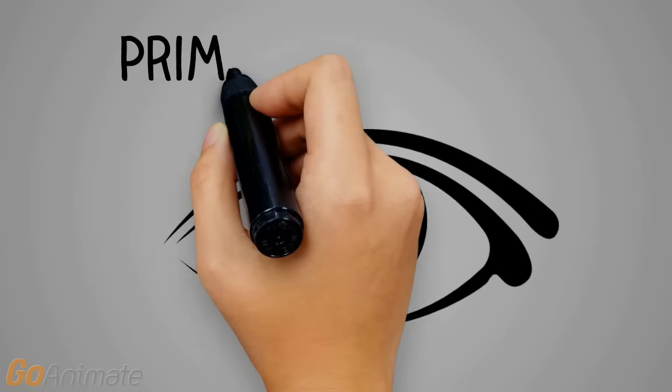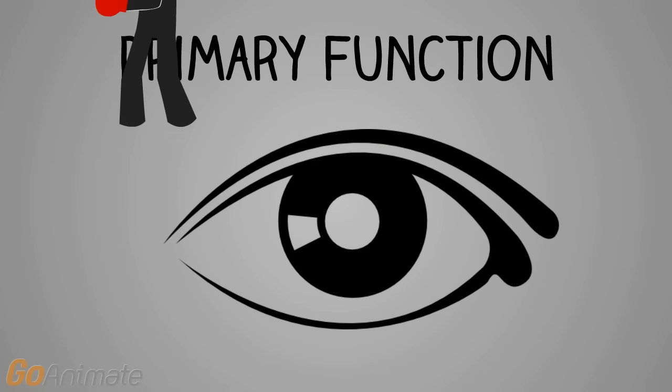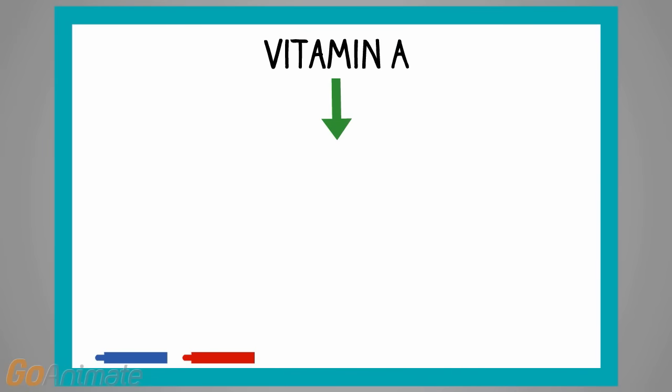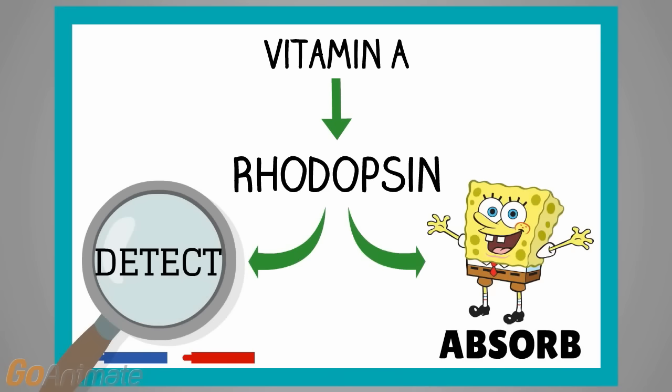Vitamin A's main role in the body is maintaining and protecting vision. Vitamin A is critical for vision because it's a component of rhodopsin, a protein that detects and absorbs light in the eyes.